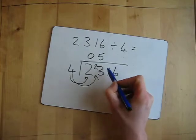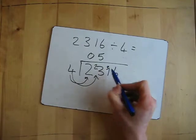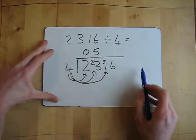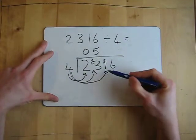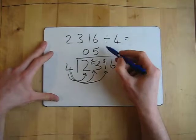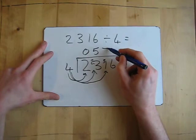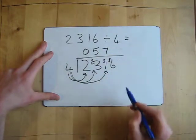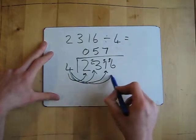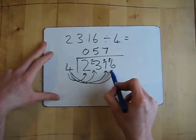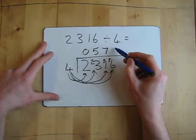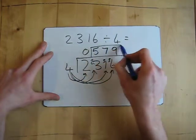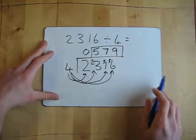Now 4 into 31 — how many times does 4 fit into 31? I know it's 7 times, because 7 times 4 is 28, which means we've got 3 left over again. And finally, how many times does 4 fit into 36? It fits in 9 times with nothing left over. So my answer is 579.